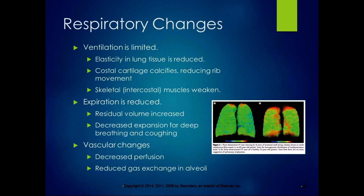Respiratory changes with aging: ventilation can be limited because elasticity in the lung tissue is reduced. Calcification of the costal cartilage reduces rib movement, which is important in ventilation. Skeletal muscles weaken, affecting the intercostal muscles and ventilation. Expiration can be reduced, residual volume is increased so you have more stale air in your lungs, and there is decreased lung expansion for deep breathing and coughing. Vascular changes can cause decreased perfusion of oxygenated blood and reduced gas exchange in the alveoli, affecting the whole body.